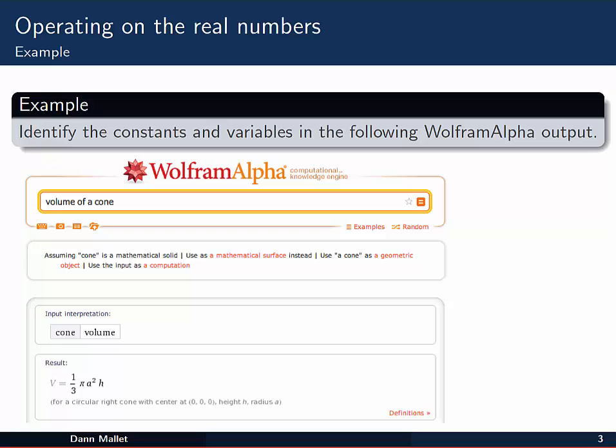Let's have a look at an example here. I want to identify the constants and variables in what I'm saying is the following Wolfram Alpha output. Now if you don't know what Wolfram Alpha is, it's a really neat little website called a Computational Knowledge Engine. It can do all sorts of mathematical things. It can do a lot of the algebra and work that we'll be doing in these videos. And it can also tell you other things like facts, like the formula for a volume of a cone for example. And that's what I've got here.